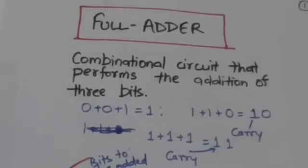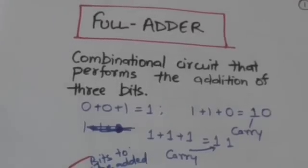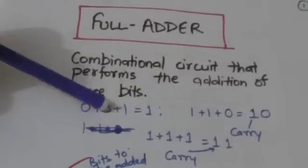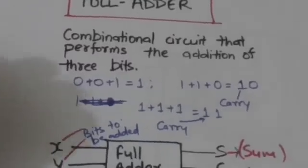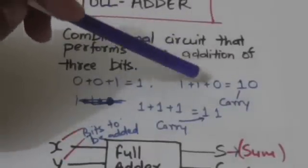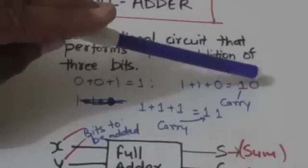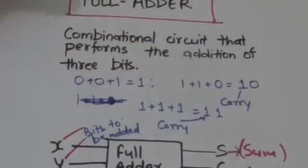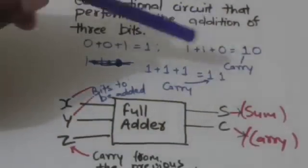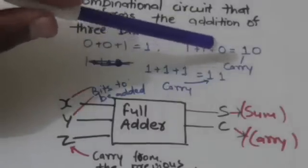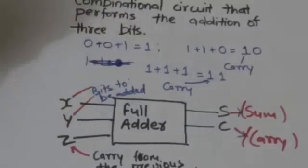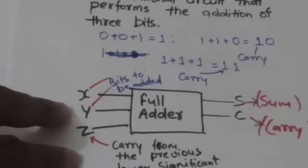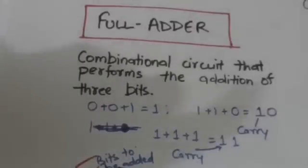Hello friends, welcome back. In this tutorial we will study about the full adder. A full adder is a combinational circuit that performs the addition of 3 bits. When we add 3 bits in which two are one and one is zero, the result would be one-zero and a carry is produced. When all three bits are one, the result would be one-one, which is 3 in decimal, and a carry is produced.